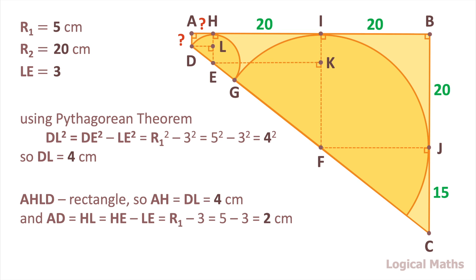And AD equals to HL equals to HE minus LE equals to R1 minus 3 and equals to 5 minus 3. And it equals to 2 cm.